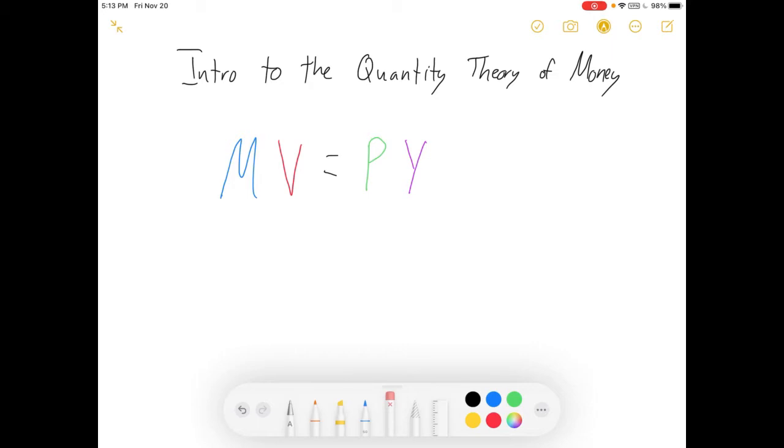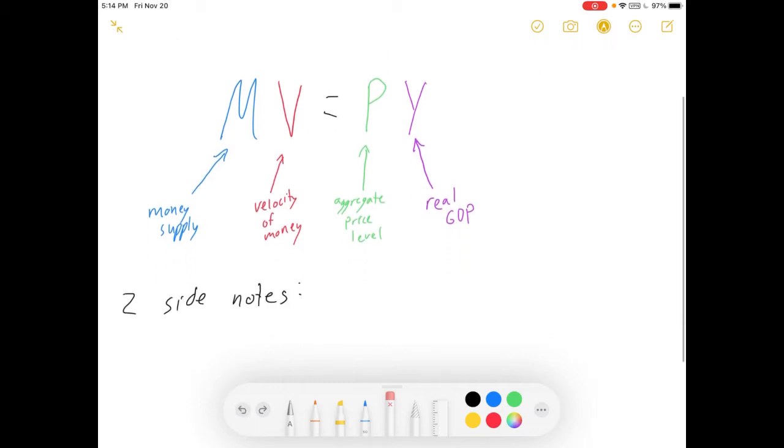You've seen this equation, MV equals PY, and I color-coded it for your delight and pleasure. What are these pieces and what do they mean? Well, the M is the money supply, how much money is in the economy. The V is called the velocity of money. The P is called the aggregate price level. And Y is real GDP, which can also be called output, and it's basically a quantity variable of how much stuff is getting made in your economy.